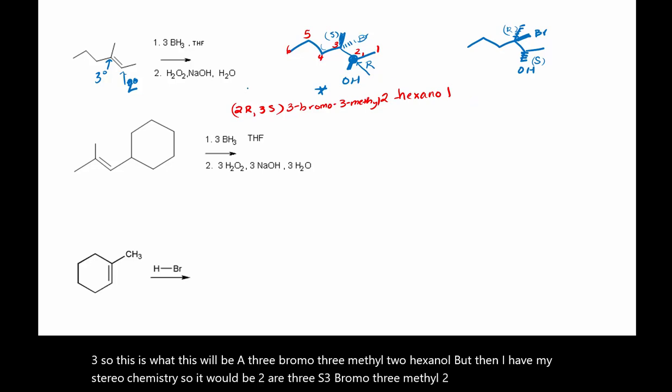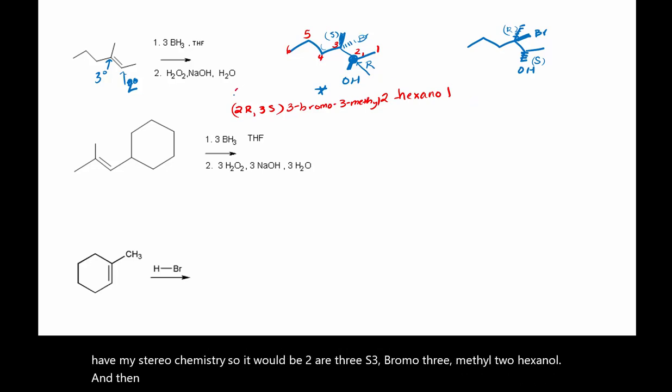And then similarly, we would have the enantiomer. So it would be 2S,3R-3-bromo-3-methyl-2-hexanol.